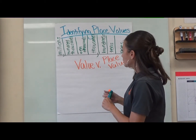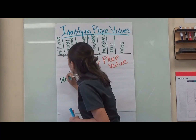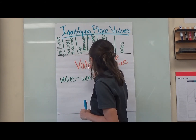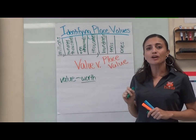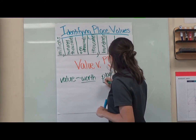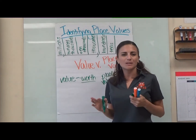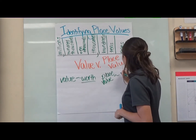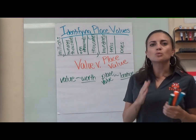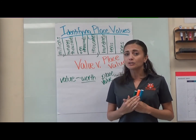So if we have value versus place value: value is going to be how much it's worth — how much is that digit worth in our bigger number. And our place value is where it is located — is it in the ones, the tens, or the hundreds? So place value is the location: ones, tens, hundreds, thousands. Our value is how much that digit is worth.